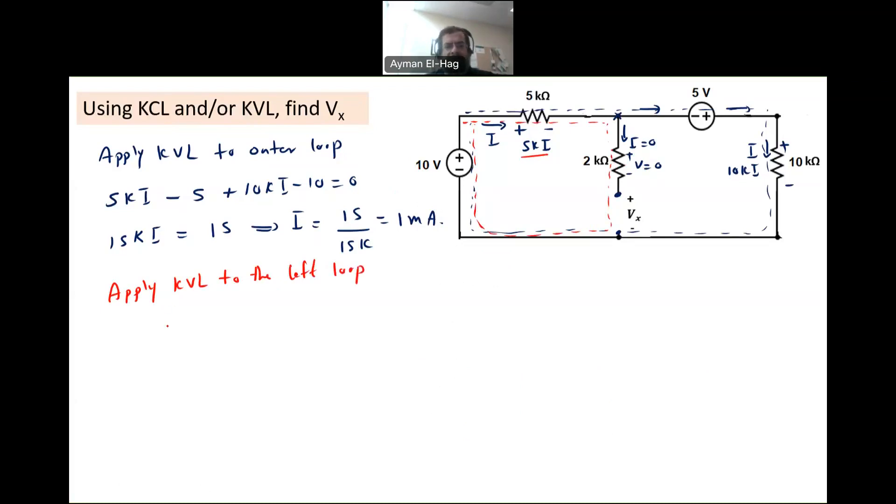So we will have, now I, we know it, it's 1 milliamp. So 5Ki, it's 5K times 1 times 10 to minus 3, 1 milliamp. Plus zero, this voltage across the two kilo ohm resistance, plus Vx minus 10 is equal to zero.